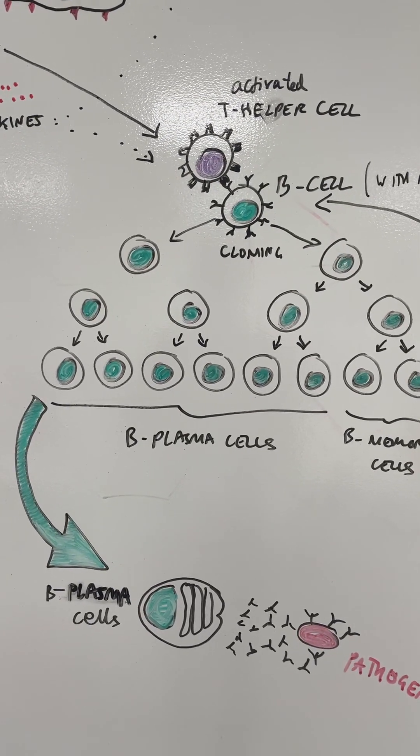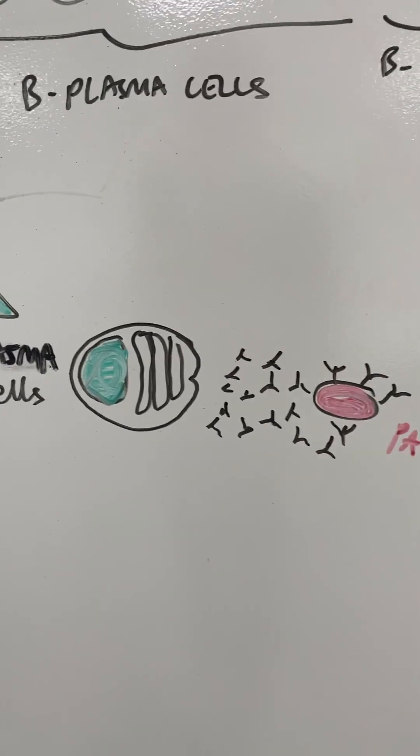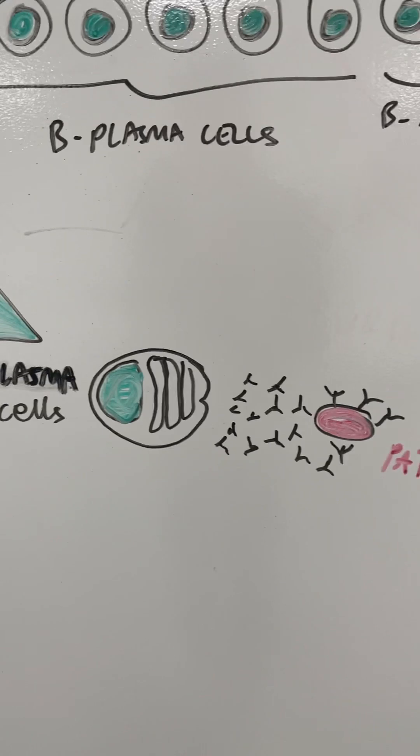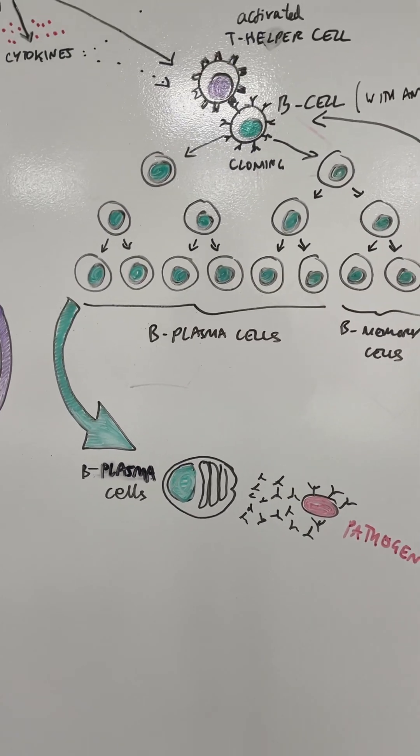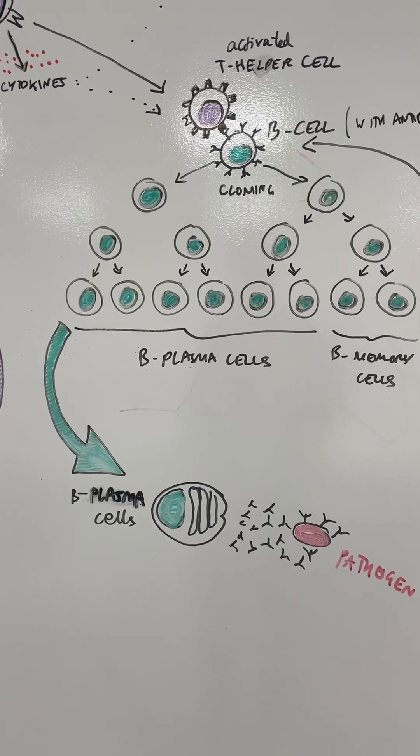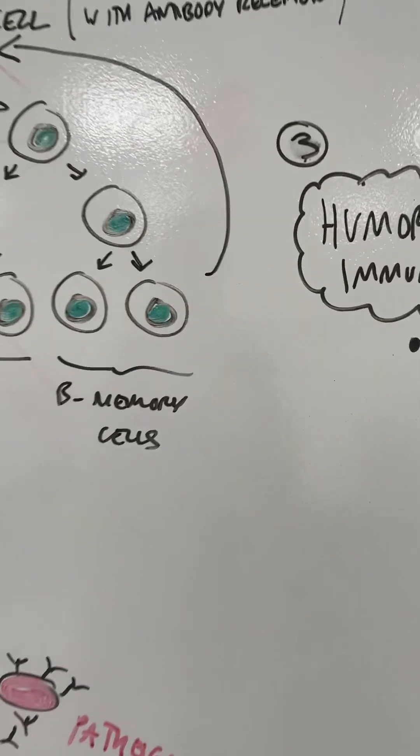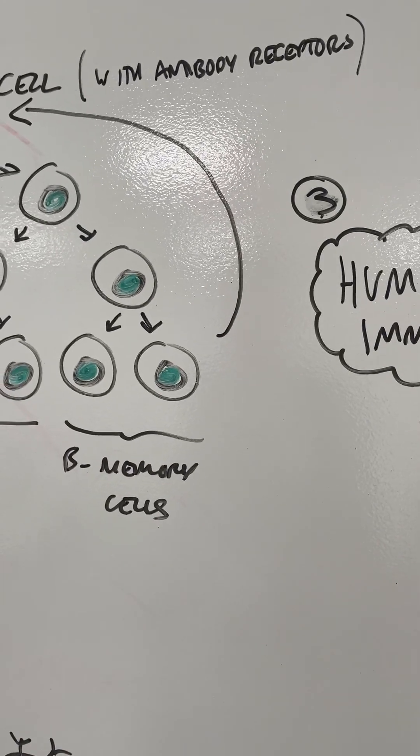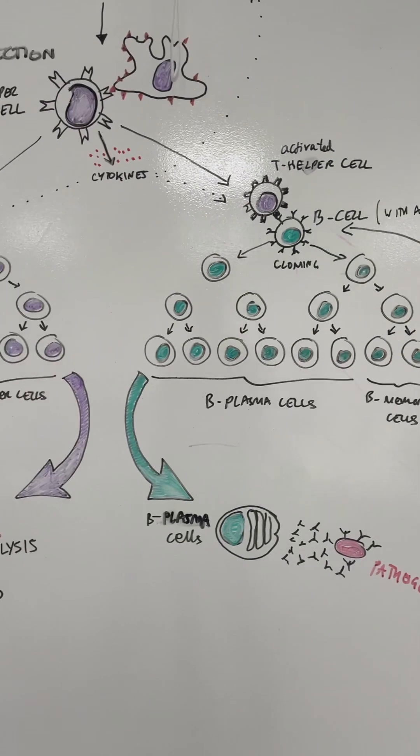Plasma cells are the ones that are going to make all the antibodies. These antibodies are specific to that particular antigen on the surface of the pathogen, and they're going to work to completely eradicate that infection. It will also make some B memory cells, a bit like we had the T memory cells, so that you've got long-term immune response.